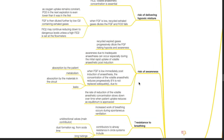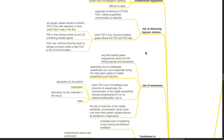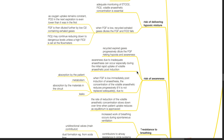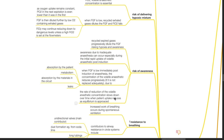Risk of awareness. Recycled expired gases progressively dilute the fresh gas flow, risking hypoxia and awareness. Awareness due to inadequate anesthesia can occur, especially during the initial rapid uptake of volatile anesthetic post-induction. When FGF is low immediately post-induction, the concentration of the volatile anesthetic reduces progressively due to absorption by the patient, metabolism, absorption by the materials in the circuit, and leaks. The rate of reduction of the volatile anesthetic slows down over time as equilibrium is approached.